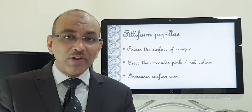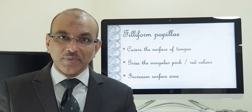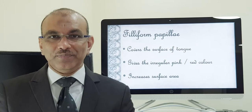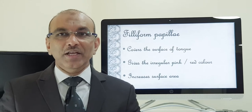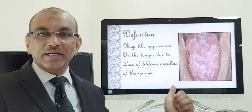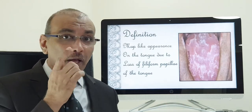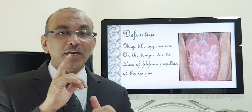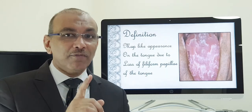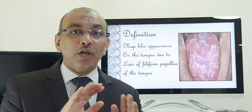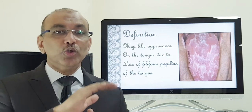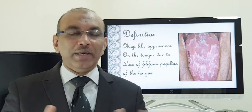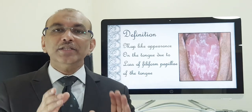When this filiform papillae is lost, the tongue instead of being rough becomes smooth. So in geographic tongue the filiform papillae are lost. Those areas will be smooth while the other areas which are rough are normal — that is geographic tongue.